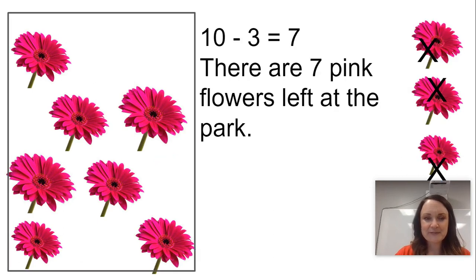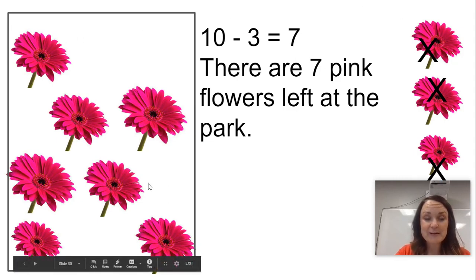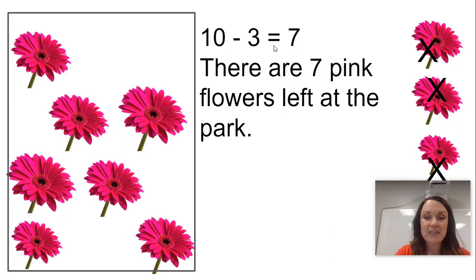Let's take a look. Well in this scenario I went ahead and I xed out three flowers because once they're picked they're gone. They went home with the little girl. Now there are fewer flowers at the park. You can see we had 10 take away 3 with 7 remaining. There are 7 pink flowers left at the park.